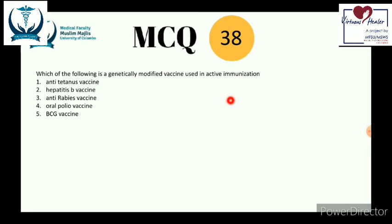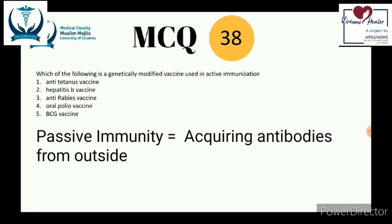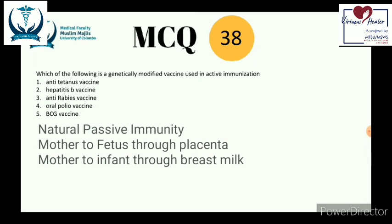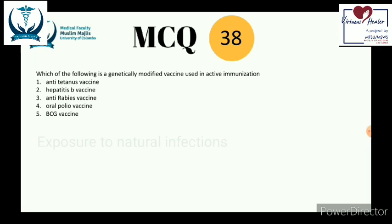Question 38: which is a genetically modified vaccine used in active immunization? Active immunity means the organism produces its own antibodies, whereas passive immunity is where antibodies are directly introduced. Both can be natural or artificial. Natural passive immunity examples include antibodies passing from mother to fetus through the placenta or through breast milk.